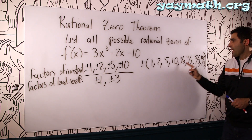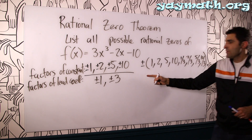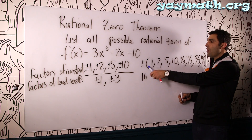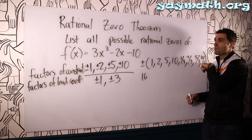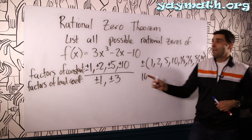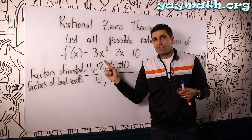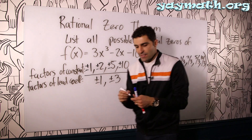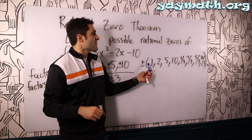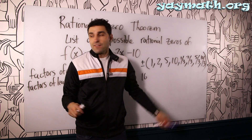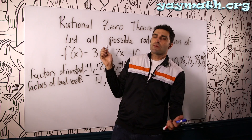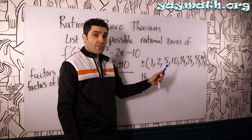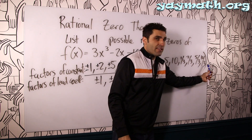That's eight times two, so that's 16 potential solutions. All the rational solutions that are possible are here. Keep in mind there's only three solutions, so if the solutions are rational, they're in this list. What it tells us is that a rational solution could never be like the number seven or eight or one half for this polynomial — if a solution were to be rational, it would be in this list.